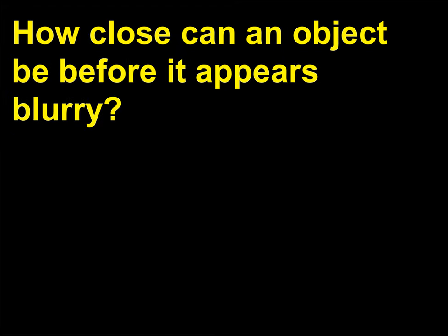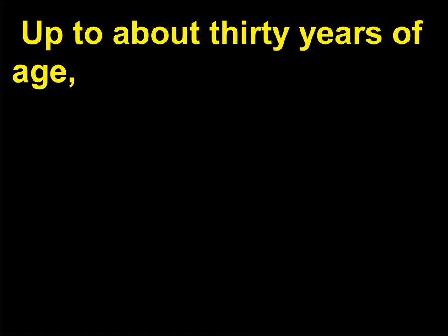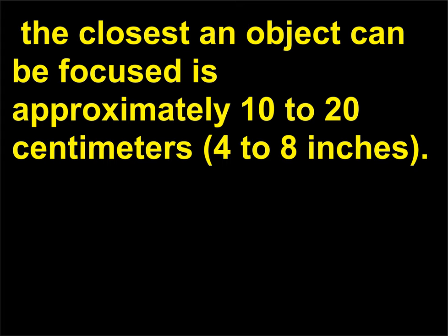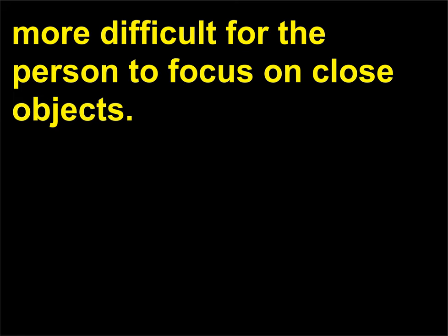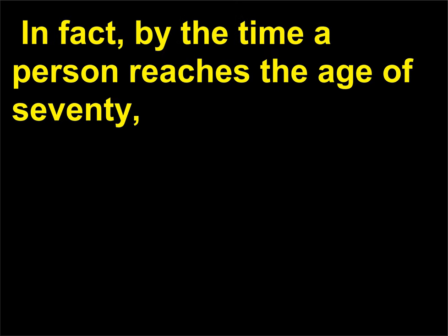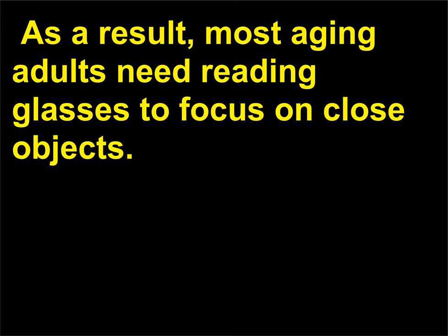How close can an object be before it appears blurry? There is a limit as to how close an object can be to the eye before the lens can no longer adjust its focus. Up to about 30 years of age, the closest an object can be focused is approximately 10 to 20 centimeters, 4 to 8 inches. As one grows older, the lens tends to stiffen and it becomes more difficult for the person to focus on close objects. In fact, by the time a person reaches the age of 70, their eyes cannot focus on objects within several meters of their eyes. As a result, most aging adults need reading glasses to focus on close objects.